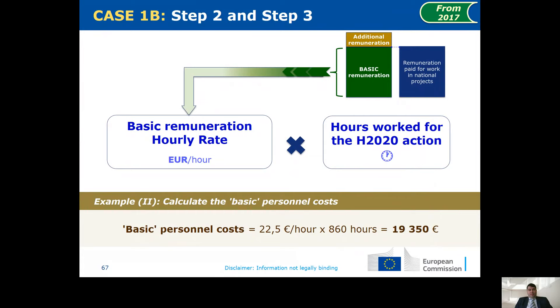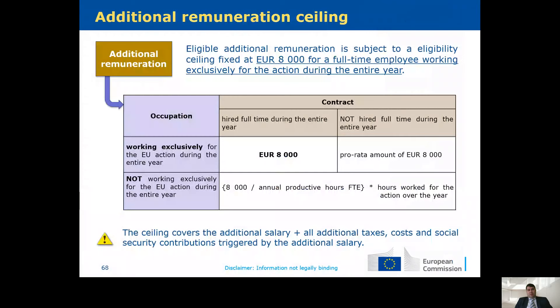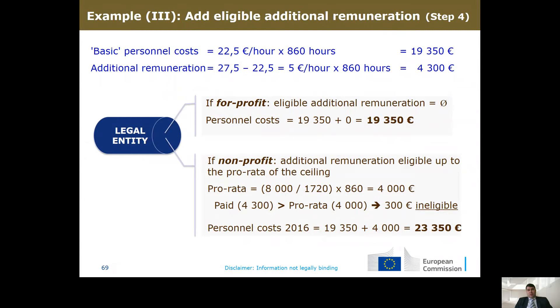Now we calculate how much is basic remuneration: we apply the rate from national projects to the hours declared to obtain the basic amount, then determine how much is eligible as additional remuneration. There is a cap of 8,000 euros per year of full-time equivalent — including salary, taxes, social charges, and so on. If you are a for-profit entity, additional remuneration is not eligible and you only get the basic remuneration. If you are a non-profit entity, you check against the 8,000 per year ceiling and also verify how much was actually paid. Not the full amount paid may be eligible, as you can see from the details of these calculations.